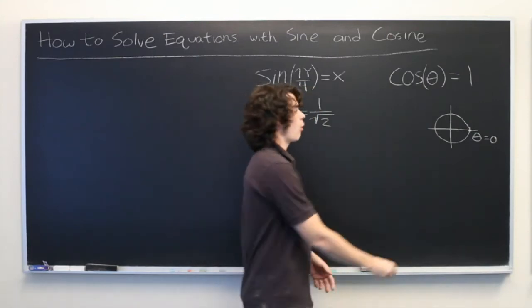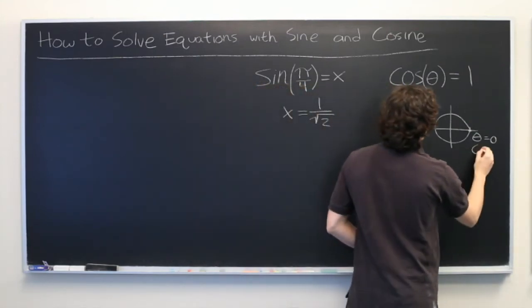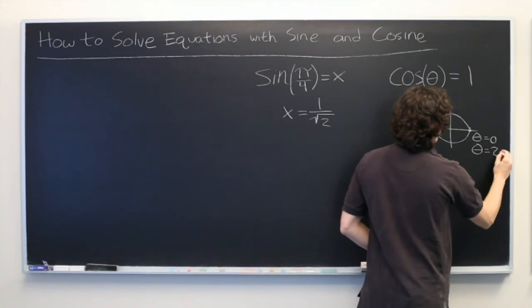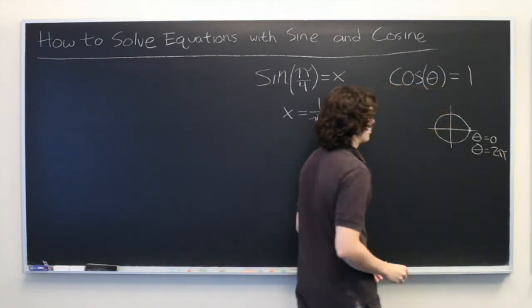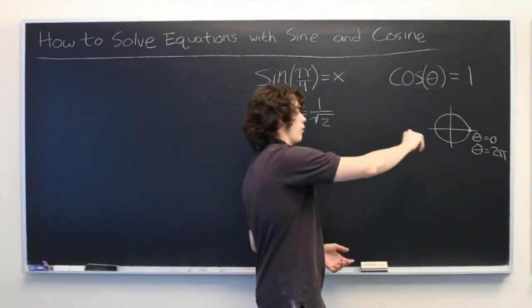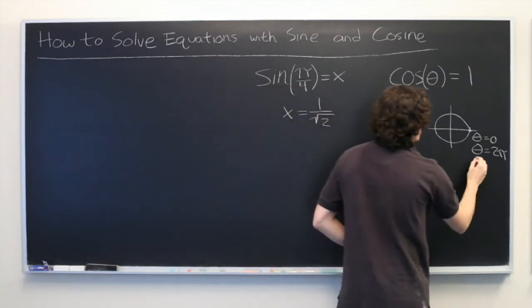But this is also true if we go all the way around the circle, and theta equals 2 pi. And it's also true if we go around the circle the opposite way, and theta is equal to negative 2 pi.